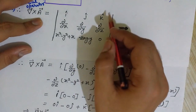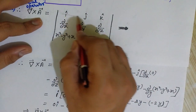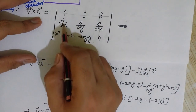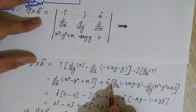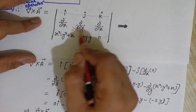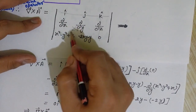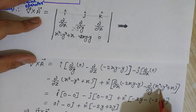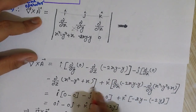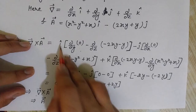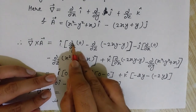For the k̂ component, we remove the k̂ column and row and get the four remaining terms: +k̂ × [(∂/∂x)(−2xy + y) − (∂/∂y)(x² − y² + x)]. This is the full expression we need to evaluate.